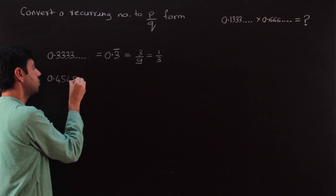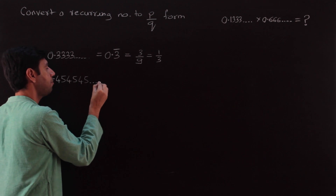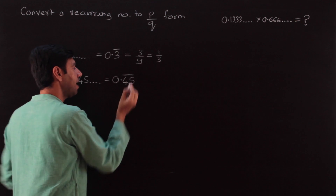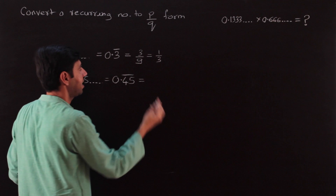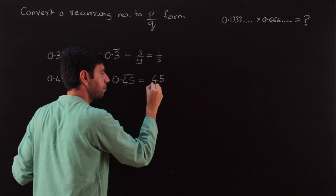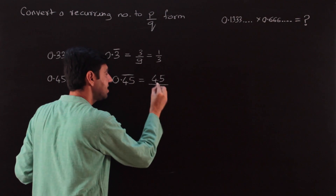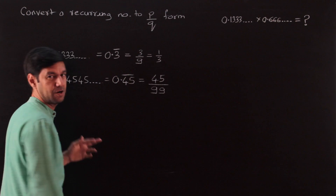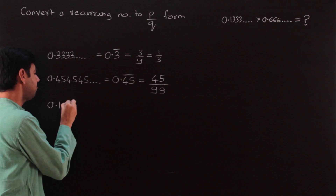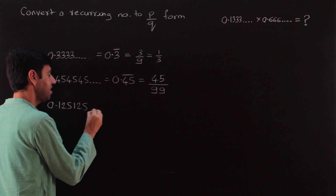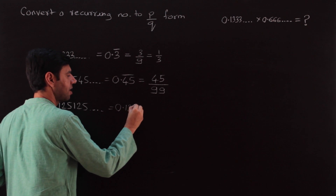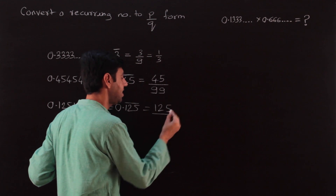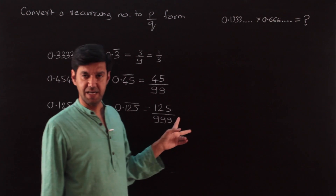For example, take 0.454545... — I put the bar over the two digits 45, because the entire 45 block is recurring. To convert it to p/q form: write that recurring part just once, and since it is two digits, divide by 99. So the answer is 45/99, which you can reduce later. Similarly, for 0.125125125..., the block 125 repeats — write 125 once, it has three digits, so divide by 999. This cannot be reduced, so 125/999 is the final answer.